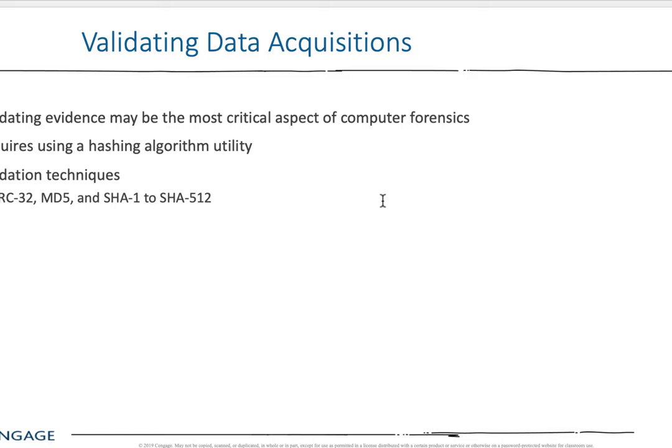Validating data acquisitions: anytime you grab data, you'll run some sort of validation technique like MD5 — we talked about that before. SHA-1, SHA-512, CRC-32 — these are essentially hash verifications. You can always compare the hash values of two files, for example your stored file and the working file, to confirm they match.